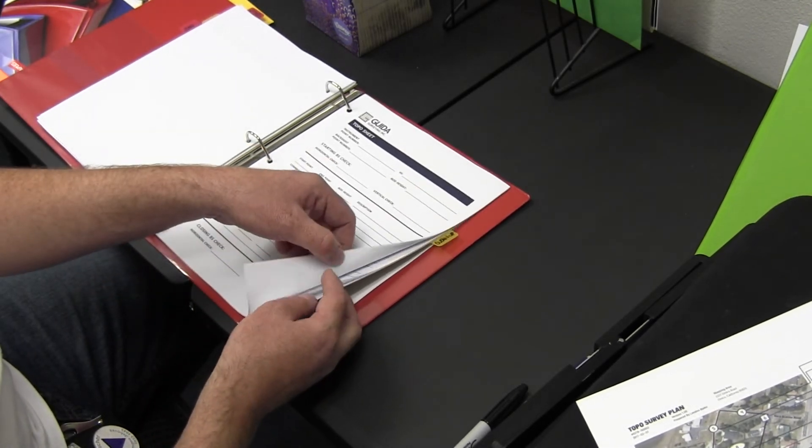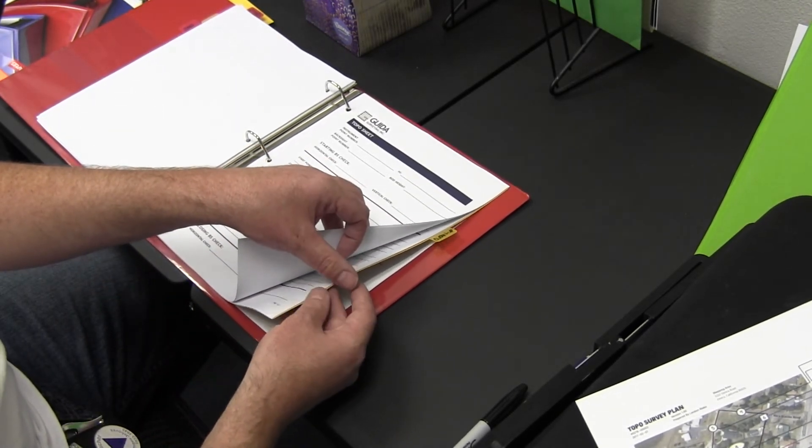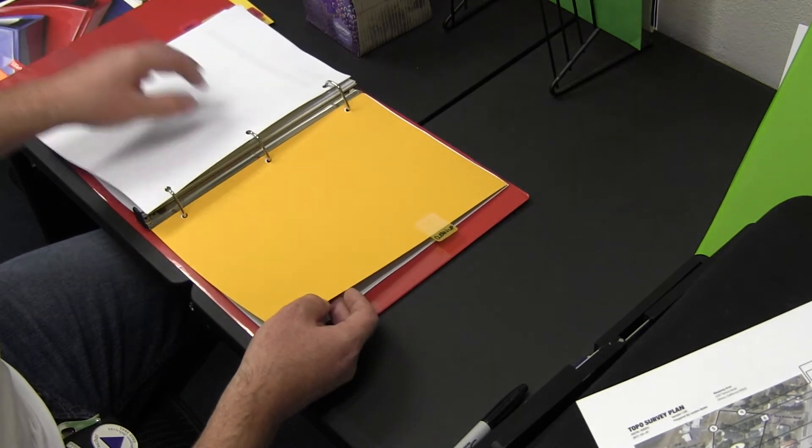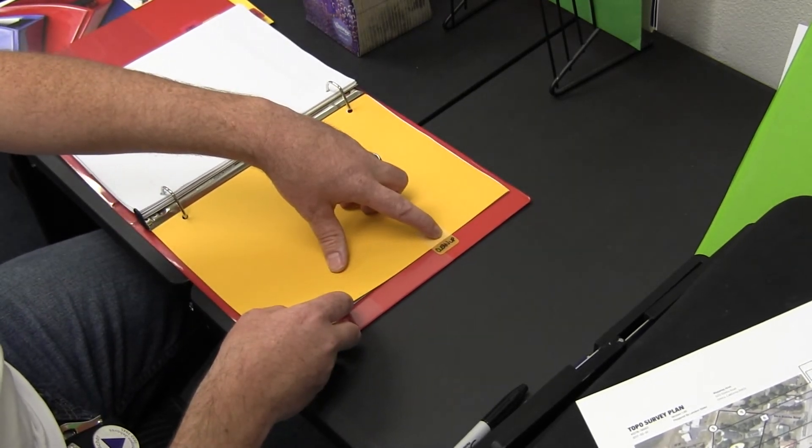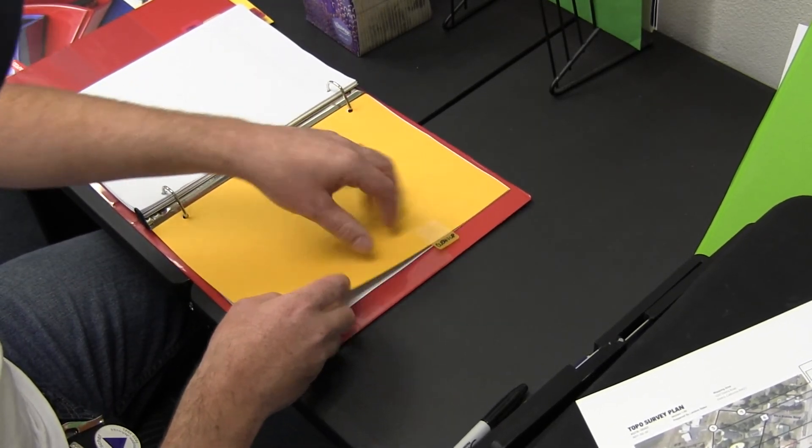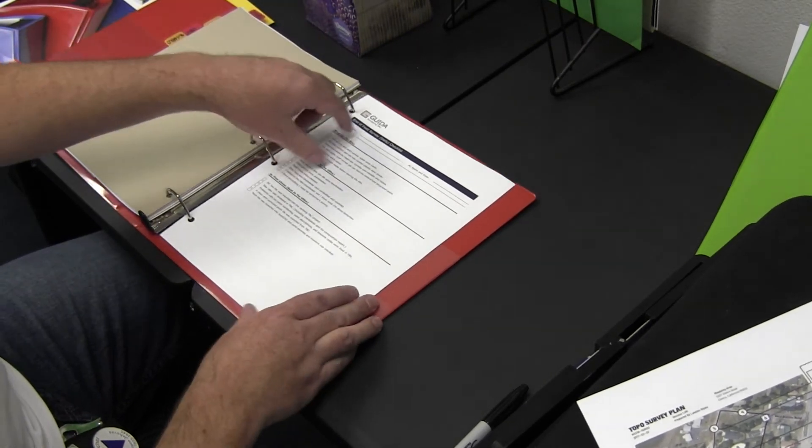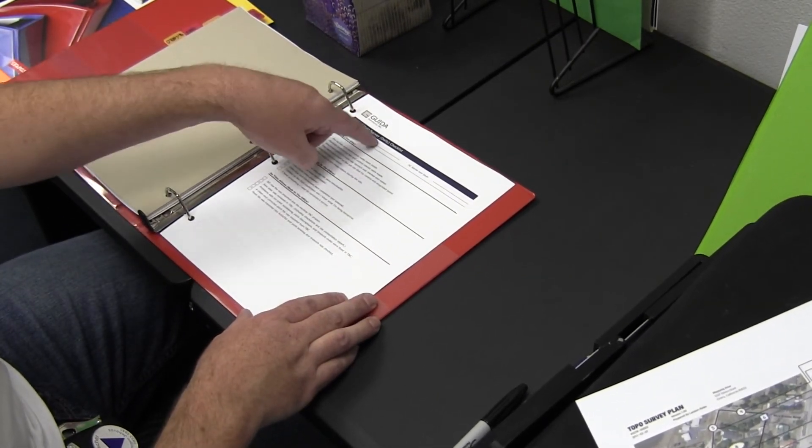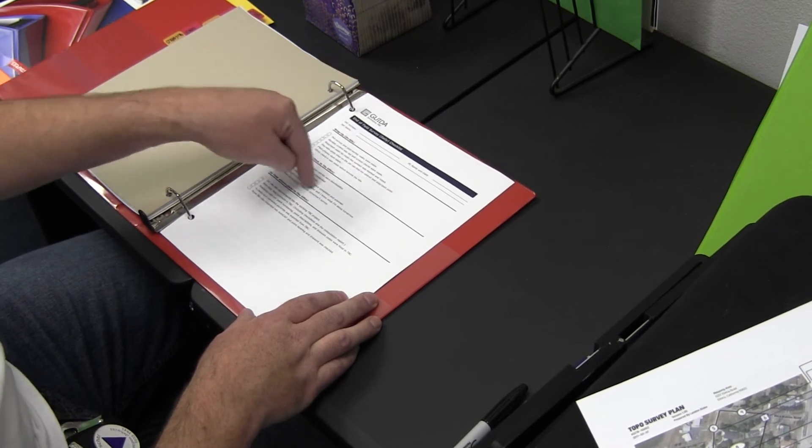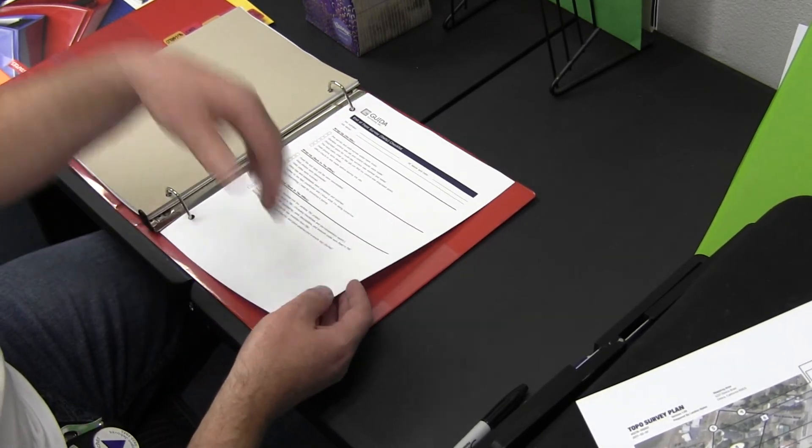The last section is the cleanup tab. This is typical—every job gets a cleanup tab, and that just has two checklists in it. This is the end of the field survey, the daily checklist. These are things you're supposed to do every day before you leave the site, even if you're going back the next day.